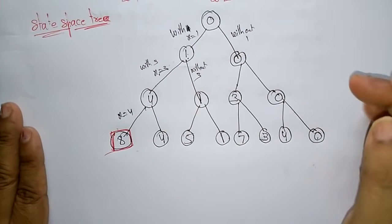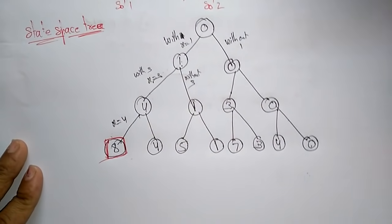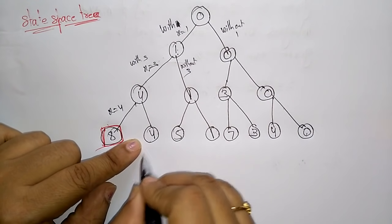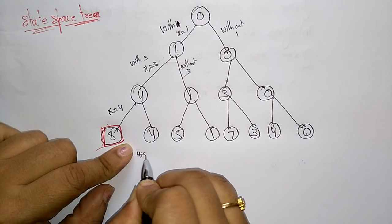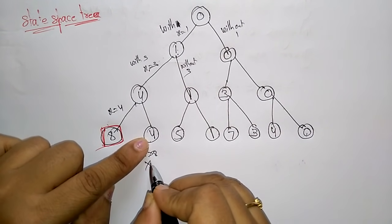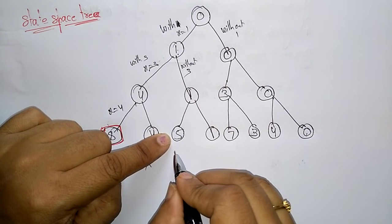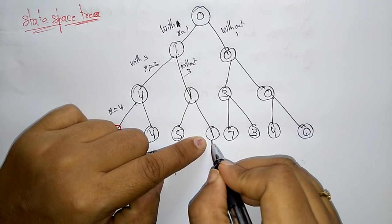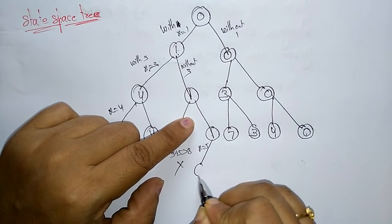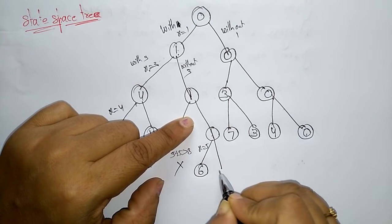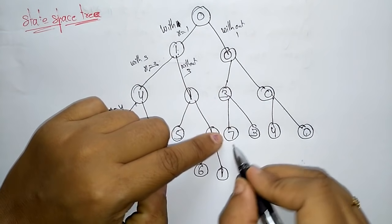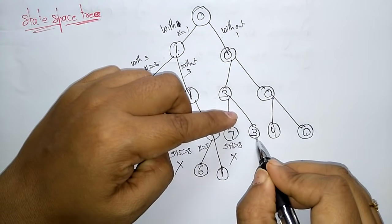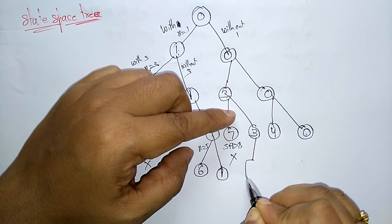Since we already got a solution at the leaf node, no need to add elements there. For the node 4: 4 + 5 = 9, which is greater than 8, so skip this node. For node 5: 5 + 5 = 10, greater than 8, so skip. For node 1: 5 + 1 = 6; right side just copy 1. Then 7 + 5 = 12, greater than 8, skip. For node 3: 5 + 3 = 8 — we got the second solution!